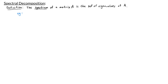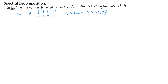Let A be the matrix with entries 1, 5, -2, 5, 4, 5, -2, 5, 1. We saw that the spectrum of A is the set {9, -6, 3} — those are the eigenvalues for A.